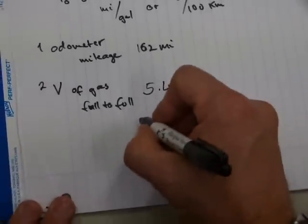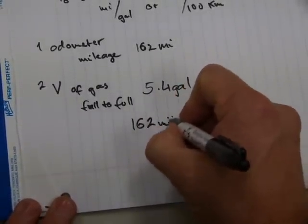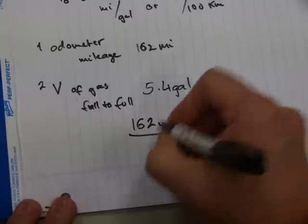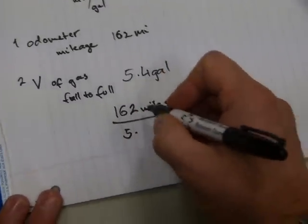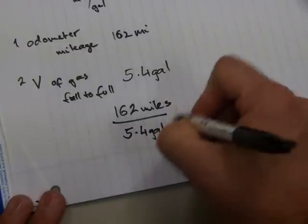So what you do then with your calculator is, you do one division: 162 miles divided by 5.4 gallons.